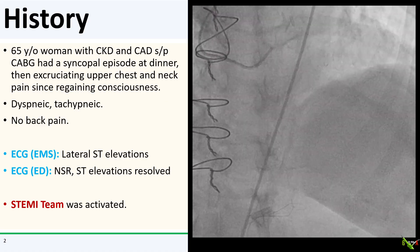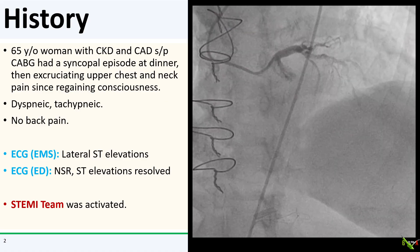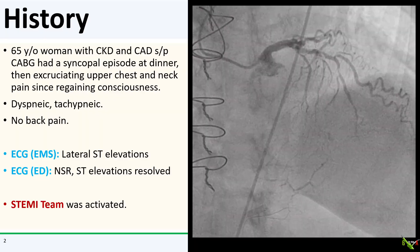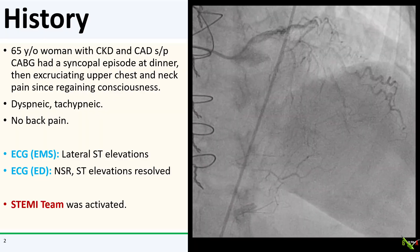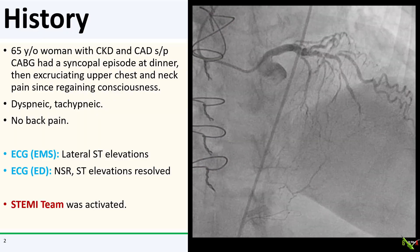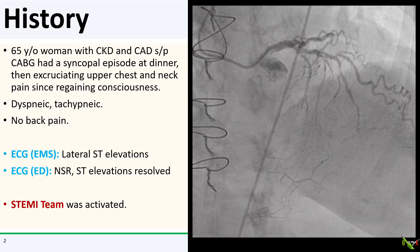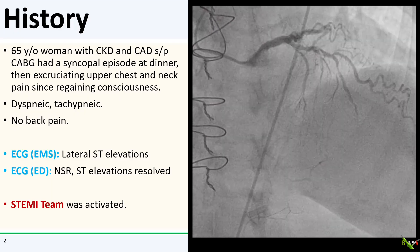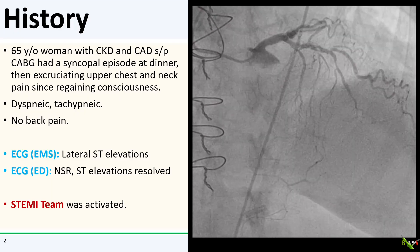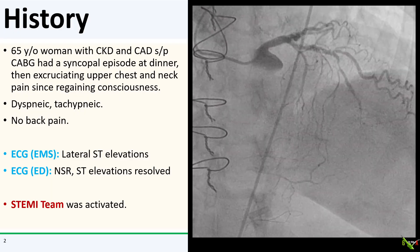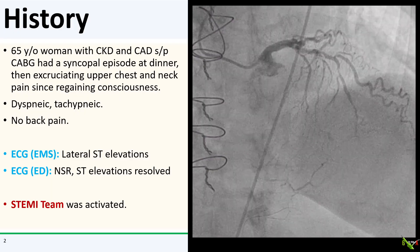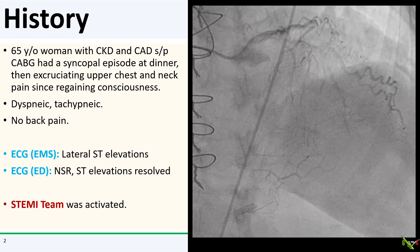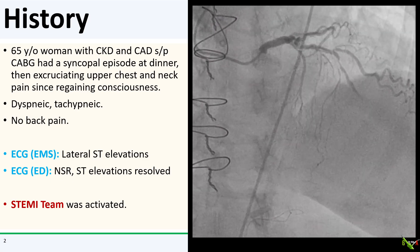The patient is a 65-year-old woman with kidney disease and a history of CABG, who presented to the ED after a sudden syncopal episode at her dinner table. She was only out for a few seconds, but when she regained consciousness, she had excruciating upper chest and neck pain.